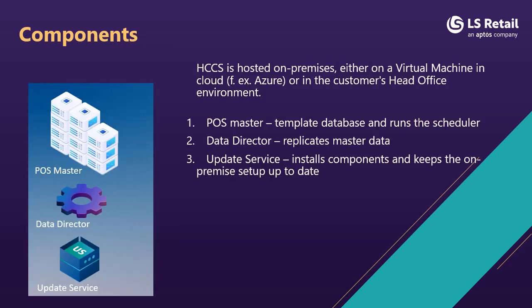The components of the hybrid component server are as follows. First, we have the POS master, which is the template database for rolling out new stores and POS terminals. The POS master also runs the scheduler. The hybrid component server acts as the communication layer between SaaS and the stores or POS terminals. Second, we have the data director, which pulls master data from head office in SaaS and keeps the offline POS up to date with master data like items, prices, offers, and customers. Third, we have the update service, which includes tools and methods to help you install all components needed to set up the POS and manage the offline environment, keeping it up to date with the newest releases.